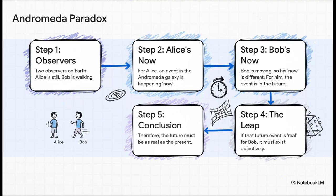And this leads us to something called the Andromeda paradox, which is a fantastic way to see the consequences. Let's walk through this, because it's wild. Okay, step one. You've got Alice standing still, and Bob just walking past her. Simple enough. Step two. For Alice, standing still, some event is happening right now, way over in the Andromeda galaxy.